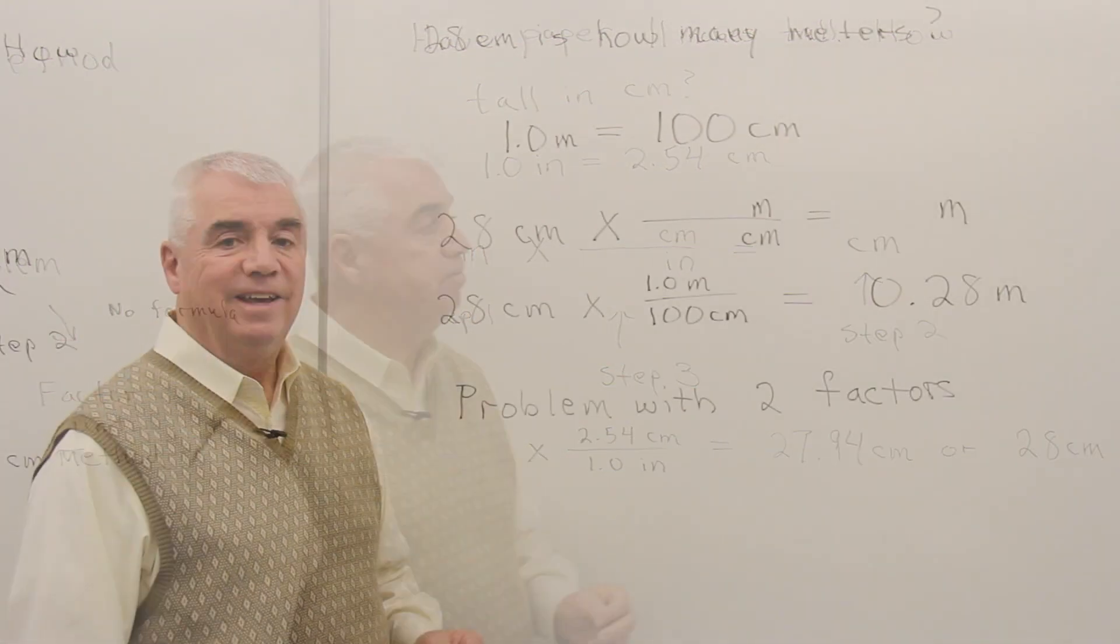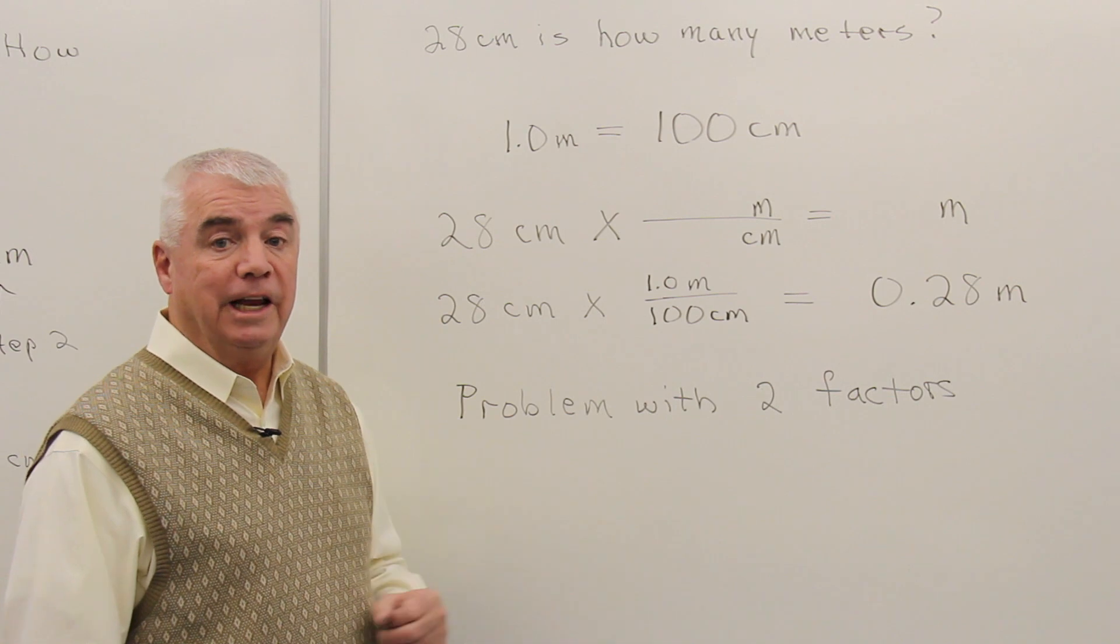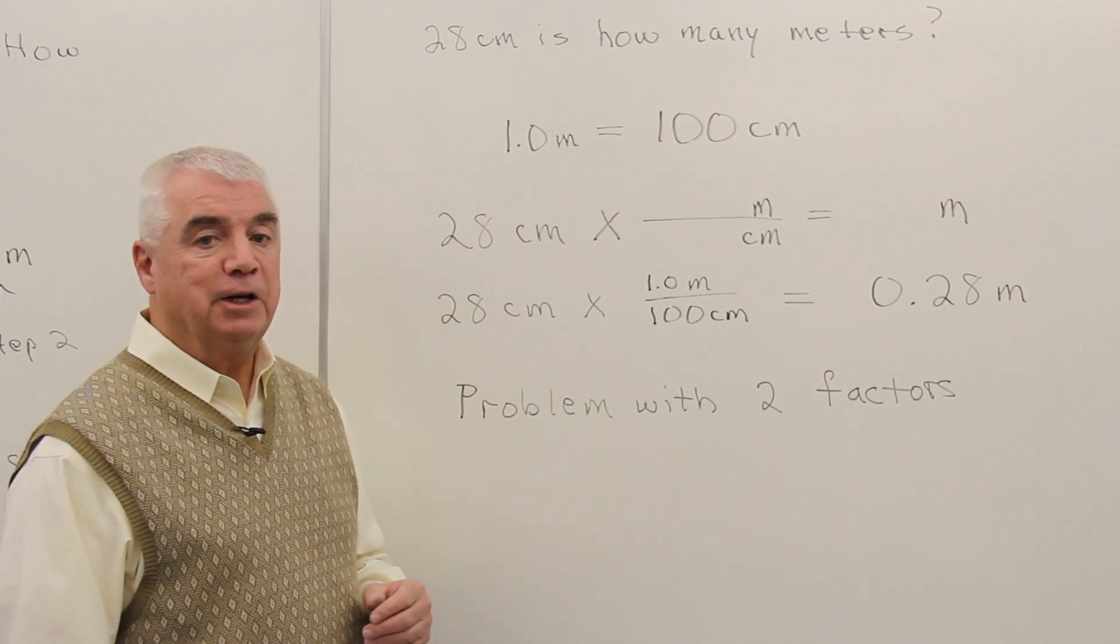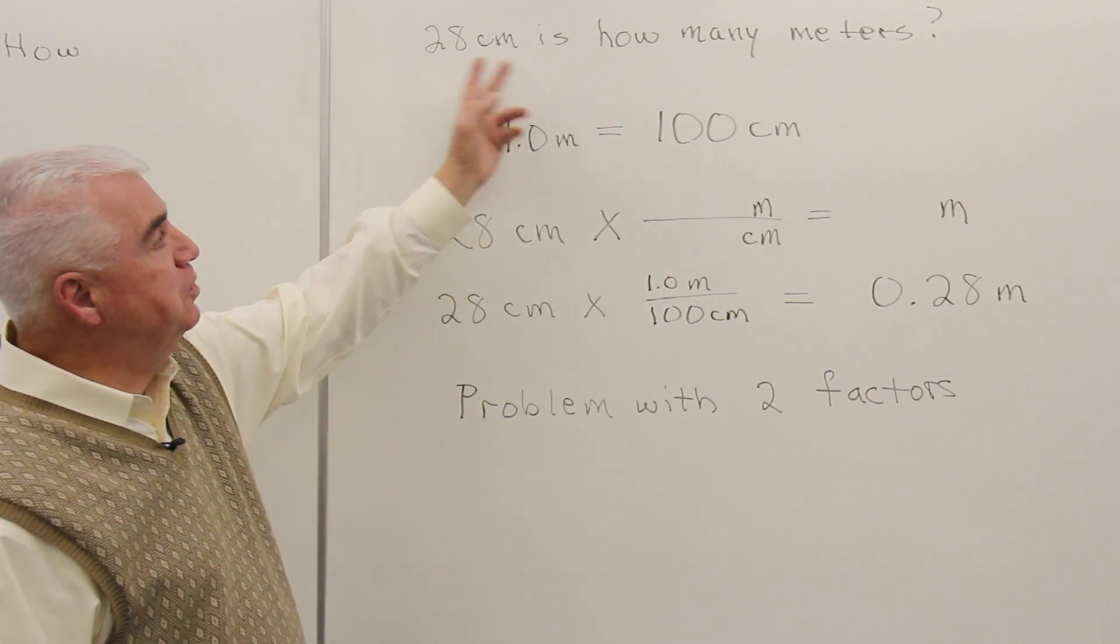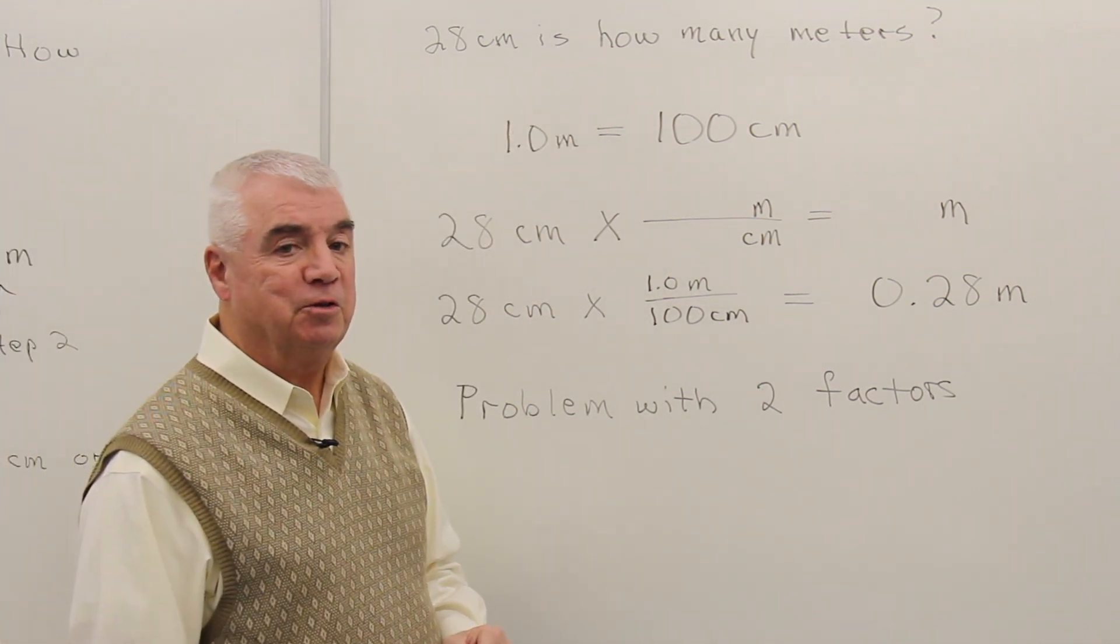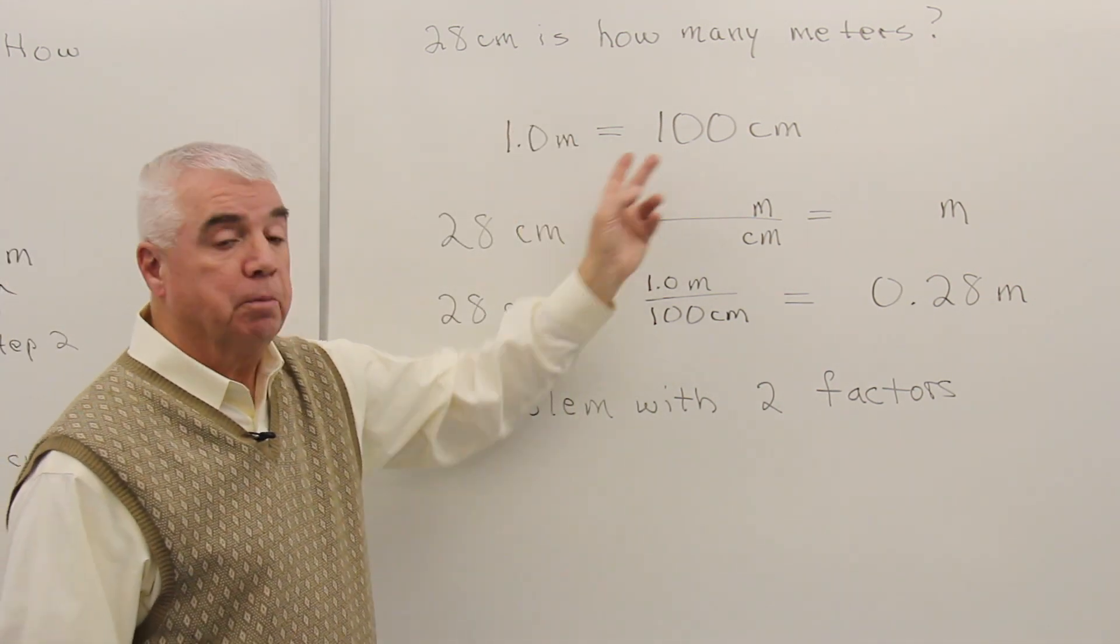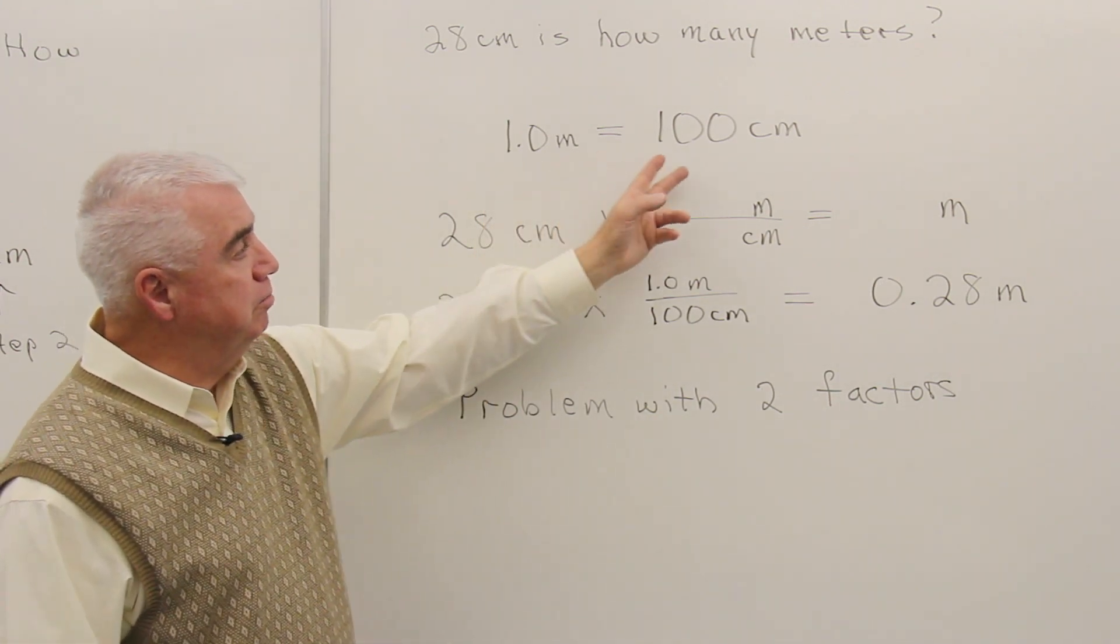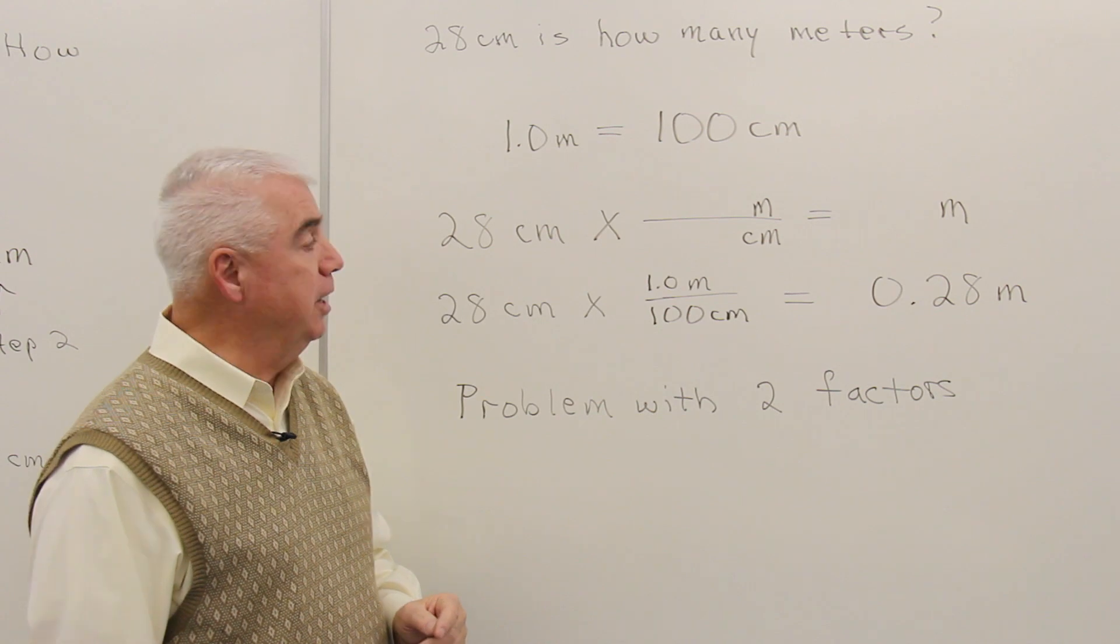Let's look at another problem. In the first problem, we looked at an English to metric conversion. This time, let's look at metric to metric. 28 centimeters is how many meters? Well, here's something that you probably know, or you can find it in a table. One meter is equal to 100 centimeters.